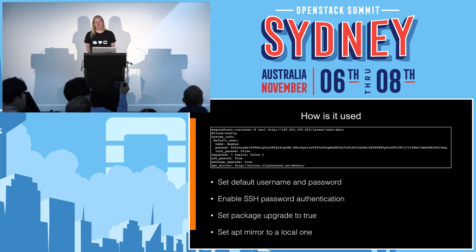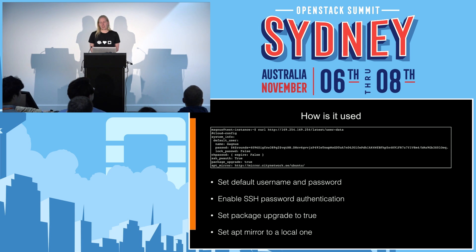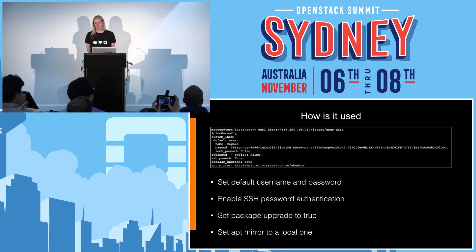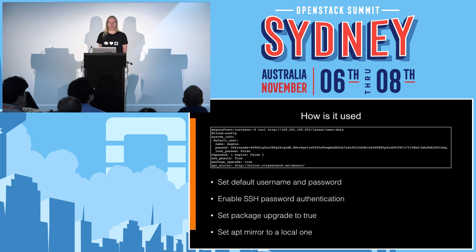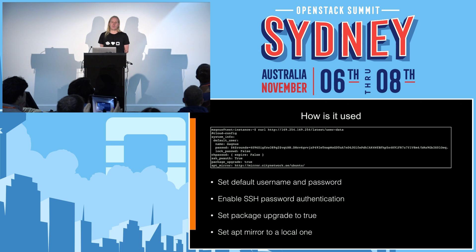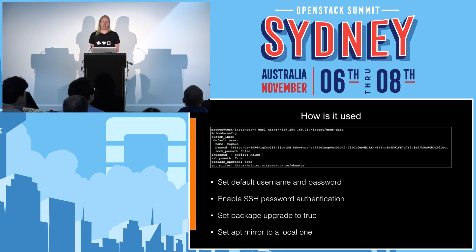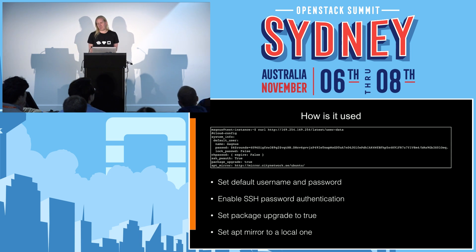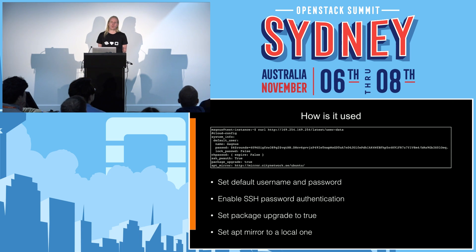You can also get the user data, as I talked about earlier. In this simple Cloud Config example, it will set the default user name and password. It will also enable SSH password authentication. And it will set package upgrade to true, which will make the virtual machine upgrade its packages when it boots, to make sure you are up to date. It also sets a mirror for that repository to a local one to speed things up while installing or upgrading.